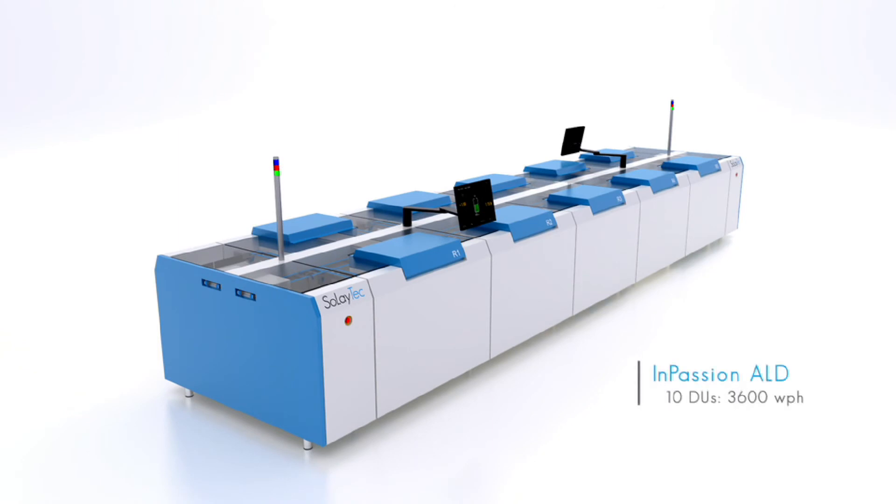The InPassion ALD is available in two versions, either scalable up to 10 deposition units or up to 6 deposition units, resulting in maximum production capacity of 3,600 wafers per hour based on 10 nanometers of aluminium oxide.